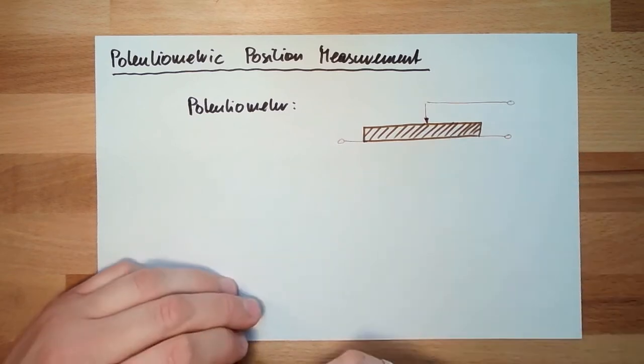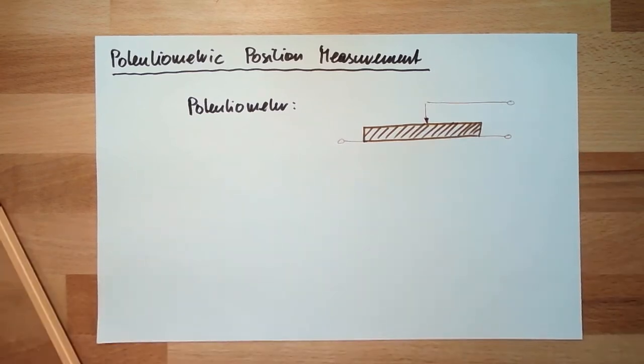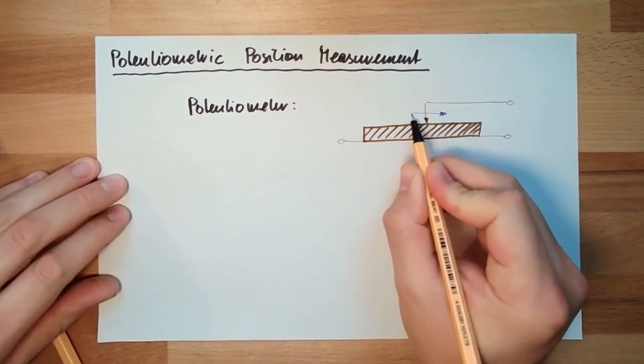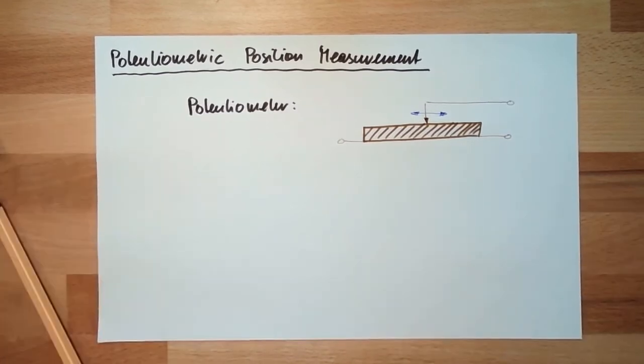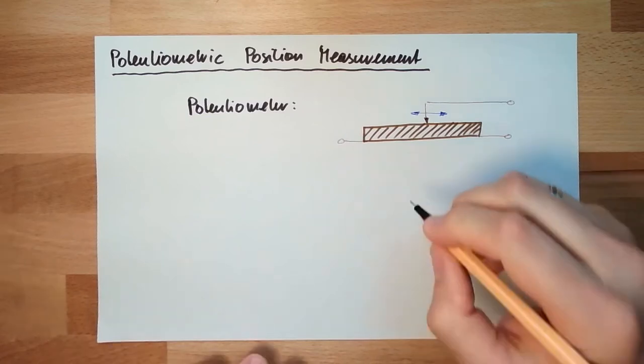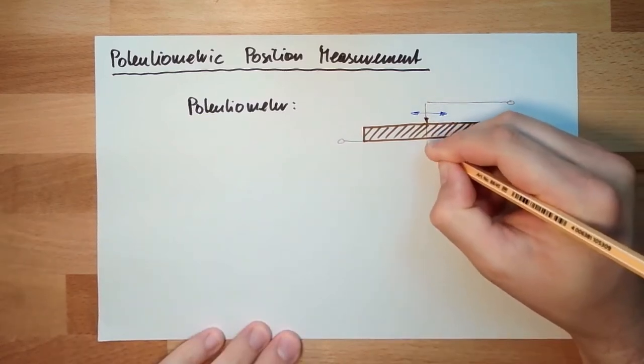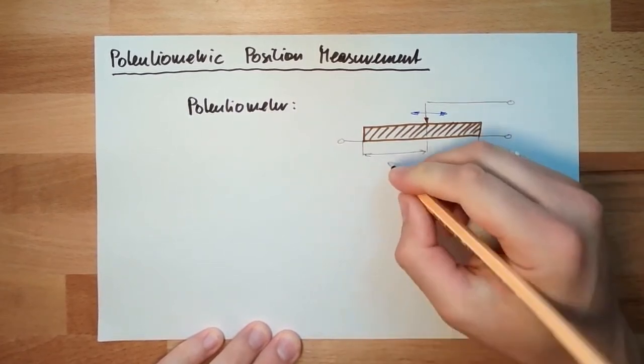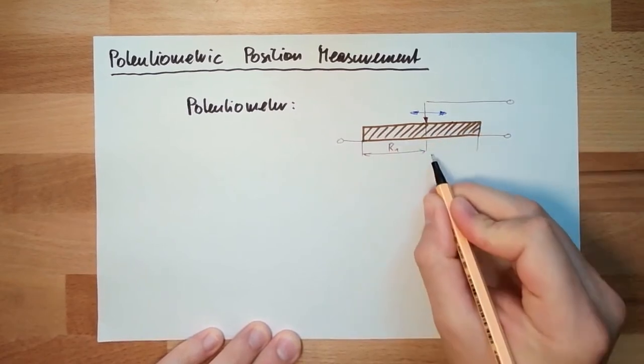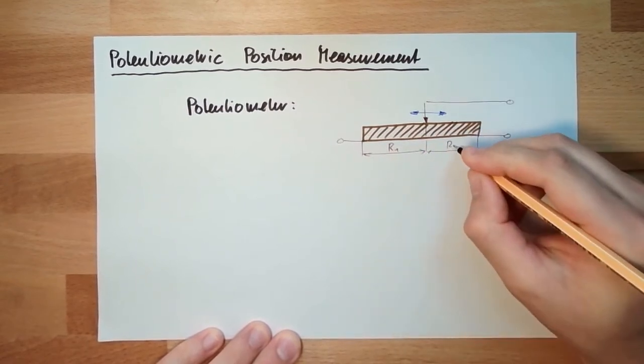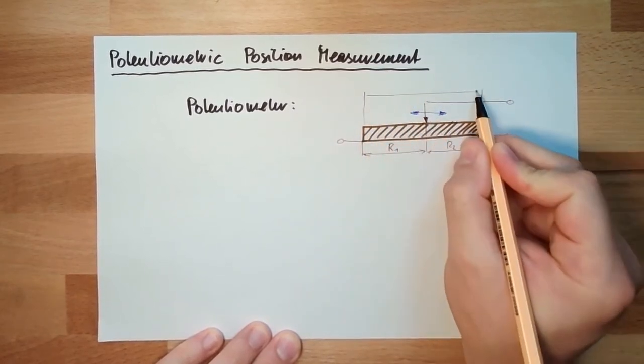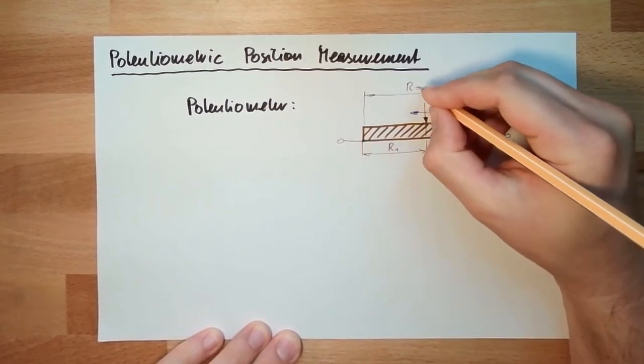The moving contact, like the name says, is moving across the surface. Basically what it does is it divides the resistor in two parts: one R1 resistor and one R2. In total, the total R is constant.